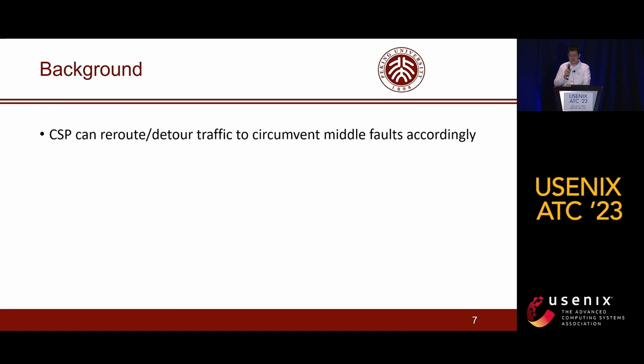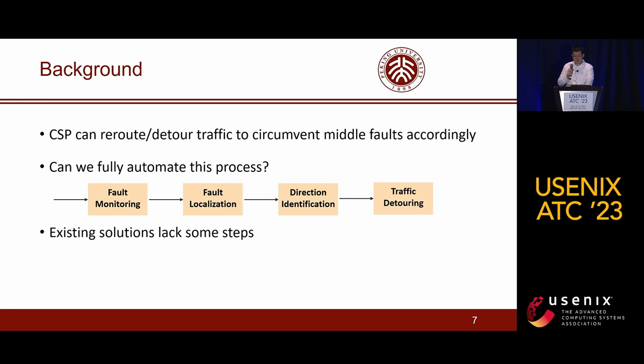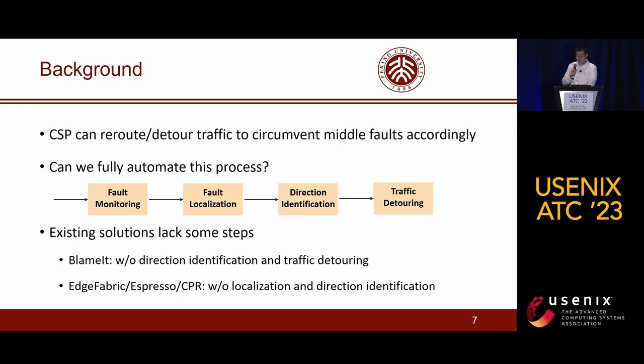CSP has already rerouted traffic to circumvent middle faults according to the answers to the above three questions. The fourth question is: can we fully automate this process to minimize the impact of faults on cloud service? In detail, the process is: first, monitor network faults; then localize where they occur; identify their direction; and finally detour traffic accordingly. All existing solutions take some steps in this process.